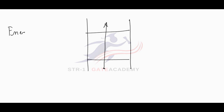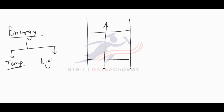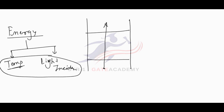Energy is supplied in two forms. Number one, we can increase the temperature of the material and its surroundings. Number two, by making light incident on the material. In these two forms we can supply energy to the material. If temperature is increased, energy is being supplied to the material. With this energy, an electron will gain energy and if it is sufficient to break the bond, this electron will break the bond, move from the valence band to the conduction band, and become a free electron. The deficiency of the electron left in the valence band is called a hole.